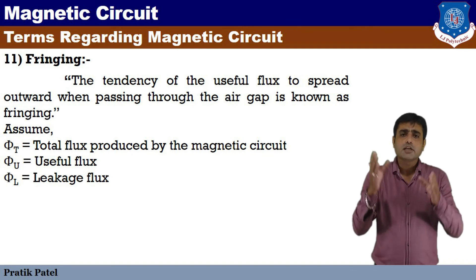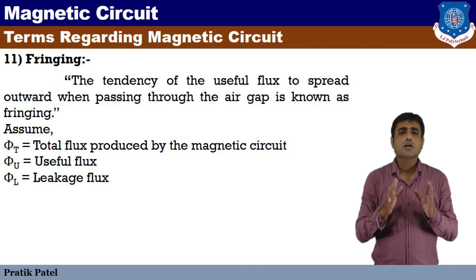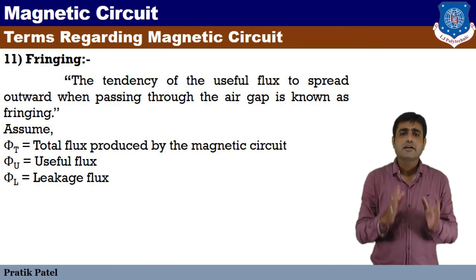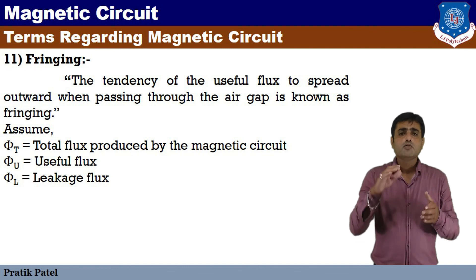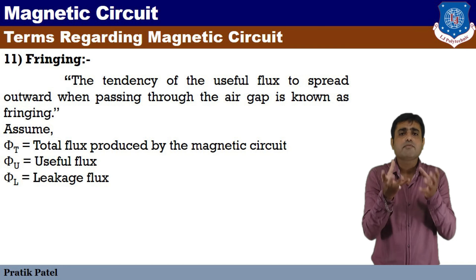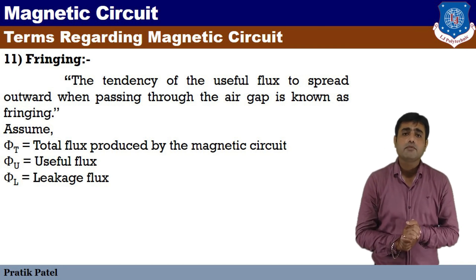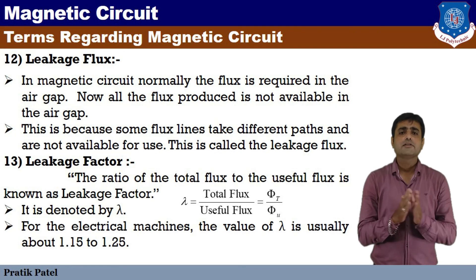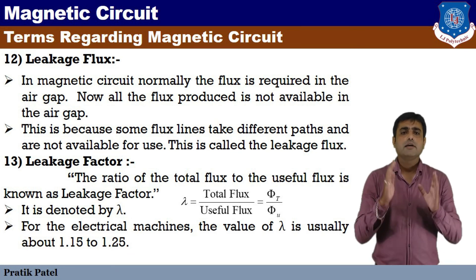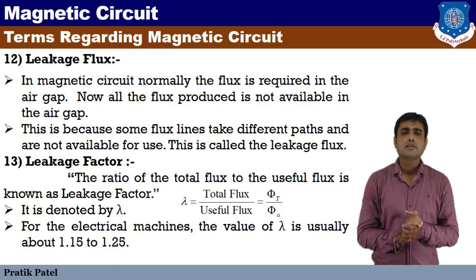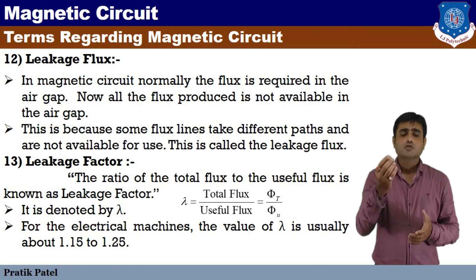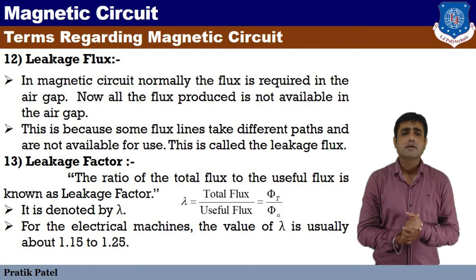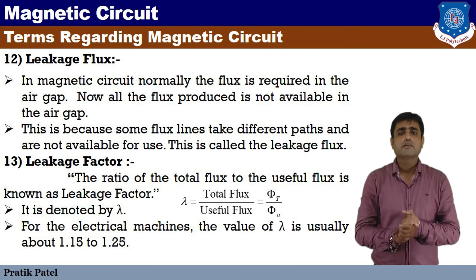The total flux produced in the magnetic circuit is denoted as phi-T. The useful flux is phi-U. There is also leakage flux, denoted phi-L, which is the flux that changes its path and does not follow the intended magnetic circuit path. This leakage flux is called leakage.